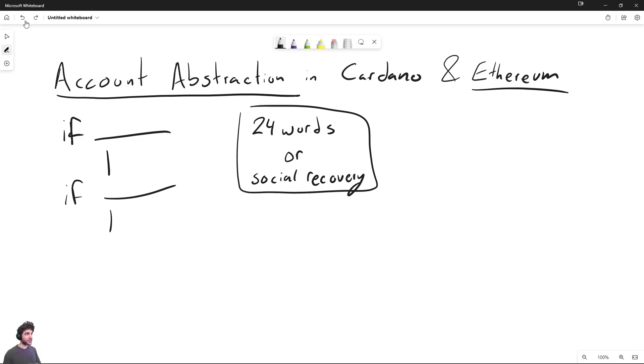So now that we have some context in what account abstraction is, this is notably popular in Ethereum right now because this is something Ethereum has wanted to have for a long time, but does not have at the moment.